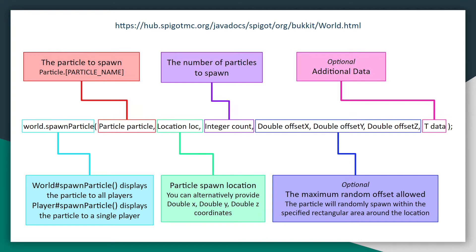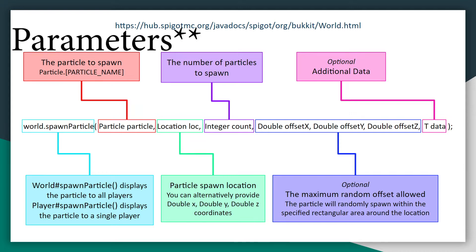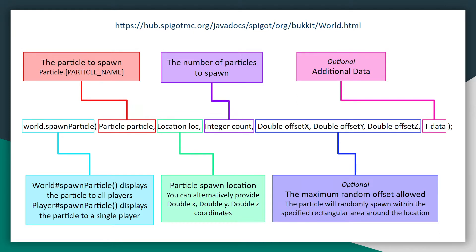The next parameter will be the number of particles that will spawn. Then you have a handful of optional parameters. First you have the offset, which will be an X, Y, and Z offset. This creates a rectangular volume around the point the particle will be spawning at, and the particle will be able to spawn randomly anywhere within that volume. If you want the particle to spawn exactly at the location you specify, you can either exclude these parameters entirely or set them to zero.